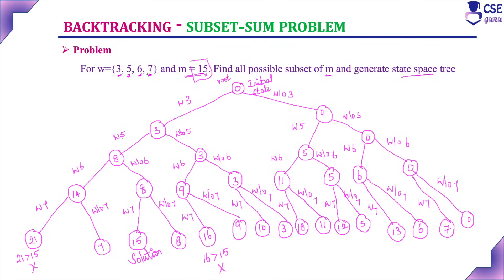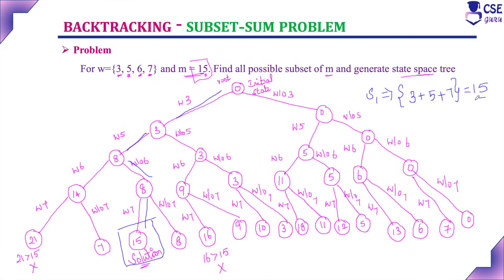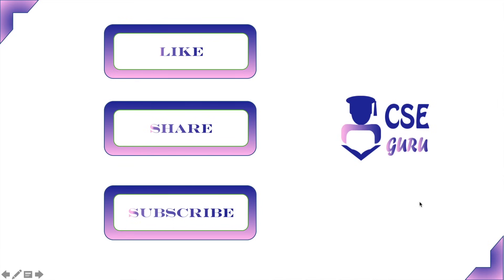There are four elements in the set. At each level we considered one element and constructed the state space tree. From this, we got only one solution: with 3, with 5, and with 7 — that is 3 + 5 + 7 = 15. The left side of the state space tree adds the element; the right side does not. We construct the complete tree and check for all solutions. This is the subset sum problem using backtracking.